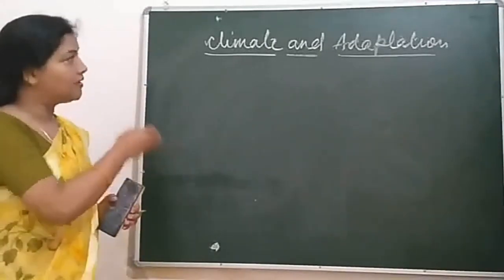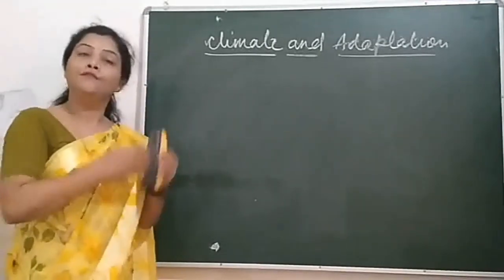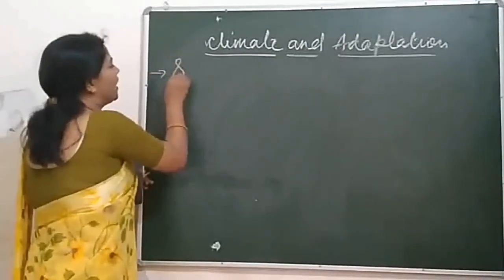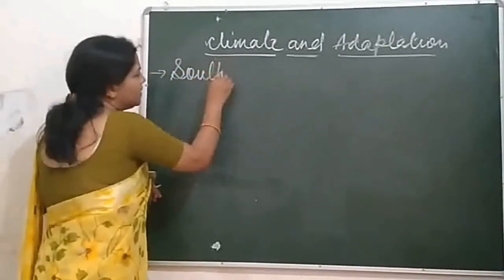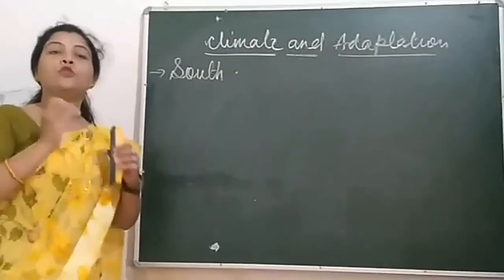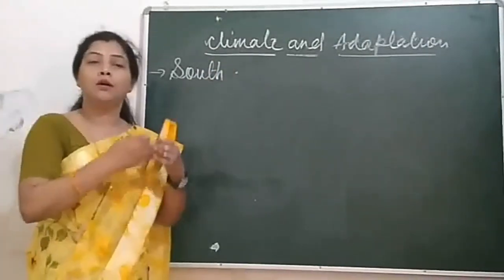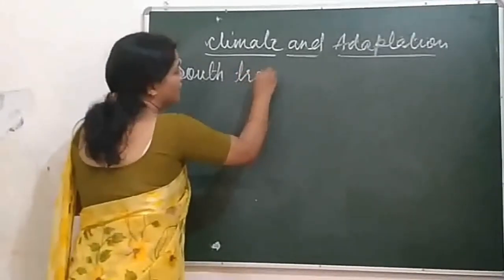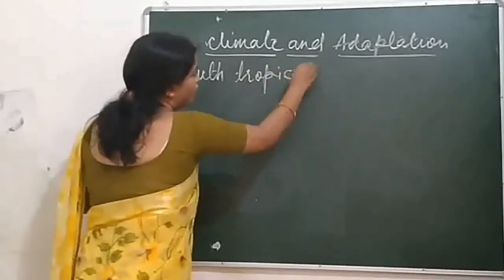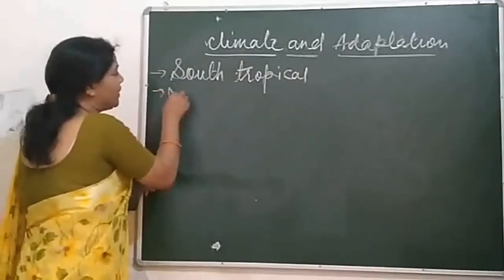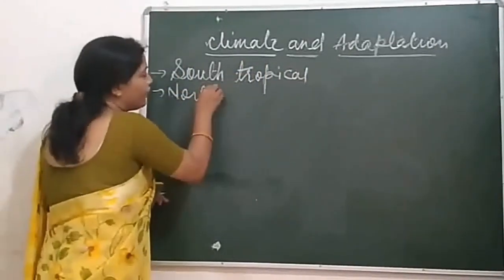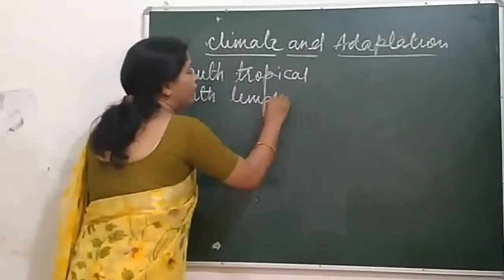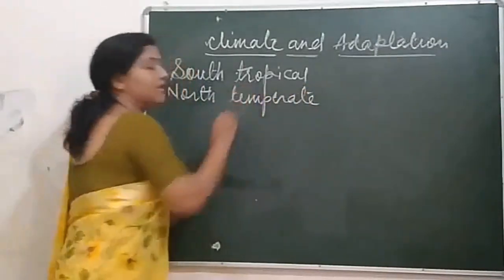What are the climatic conditions found in different parts of India? If we talk about the southern part of India, the climatic condition is tropical. And if we speak about the northern part of India, then it is temperate.